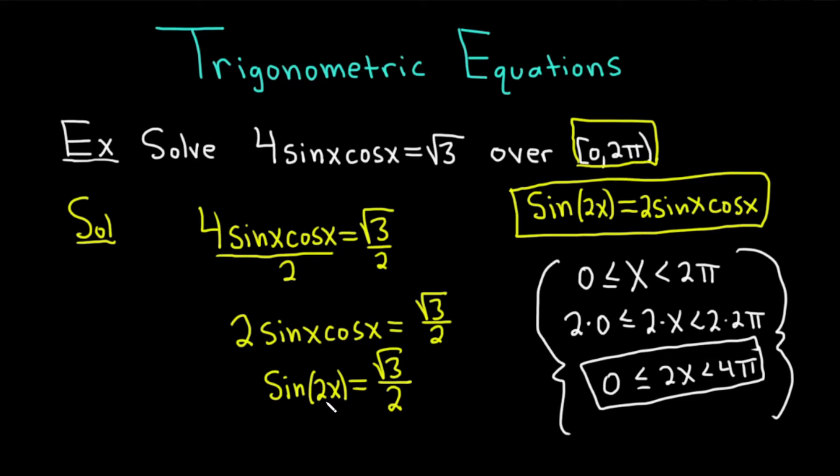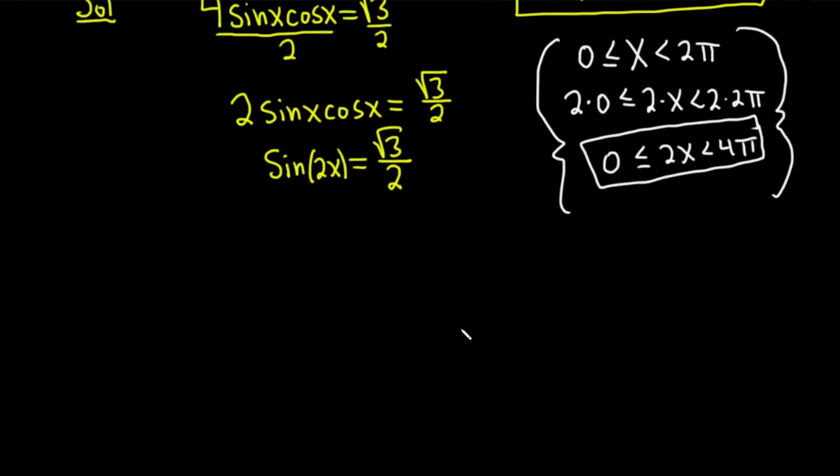And you only do it when there's a 2x. So if there was a 3x here, you would multiply by 3. If there was an x over 2, you would divide this by 2. If it's just x, you don't worry about it and you just solve like you normally would. So how do you solve? Let's do that. This is the part that requires a lot of trig knowledge.